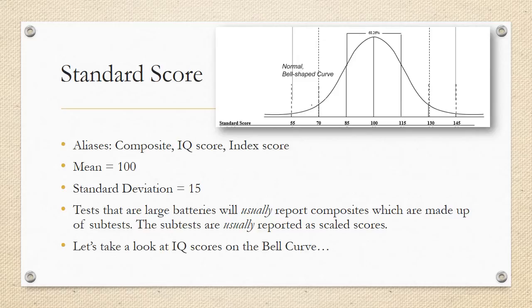The standard score can be called many things. You might hear composite score, quotient score, IQ score, or index score. These are scores that have a mean of 100 and a standard deviation of 15. So you can see it there on the bell curve. Every 15 points plus or minus from the 100 mark is a standard deviation. Tests that are large batteries will usually report composites, which are made up of subtests. The subtests are usually reported as scaled scores. Let's take a look at IQ scores on the bell curve.